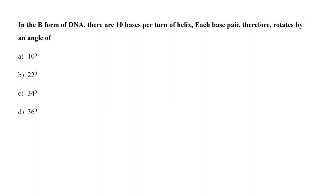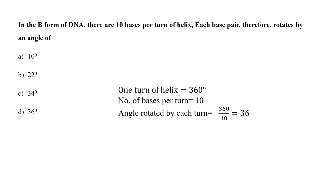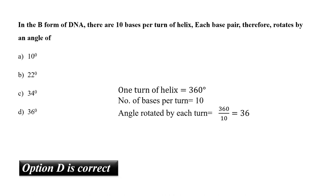In the B form of DNA, there are 10 bases per turn of helix. Each base pair therefore rotates by an angle of A. 10 degrees, B. 22 degrees, C. 34 degrees, or D. 36 degrees? One turn of helix is equal to 360 degrees, and the number of base pairs per turn in B form DNA is 10. The angle rotated by each base pair is 360 divided by 10, which equals 36 degrees. So the correct answer is option D.